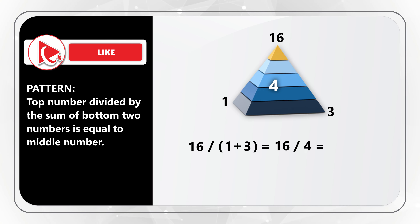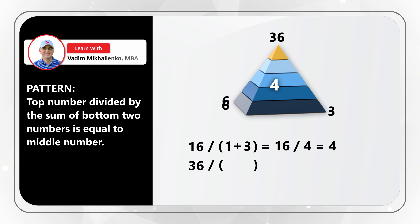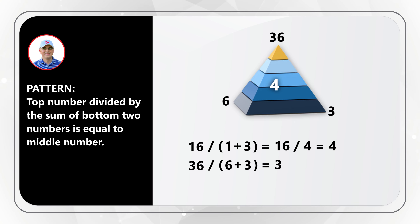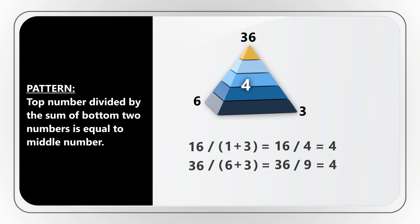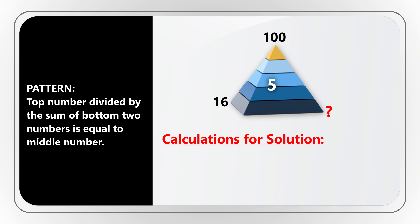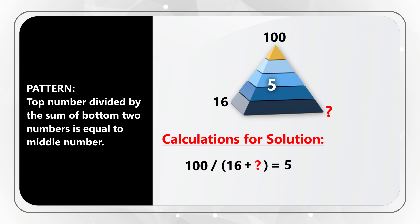Give yourself 15 to 20 seconds to determine the correct solution. I'll share my version — if you have a better way, please post in comments. There is a pattern here: the top number of the pyramid divided by the sum of the bottom two numbers equals the middle number. For example, 16 divided by (1 plus 3) equals 16 divided by 4, which equals 4.